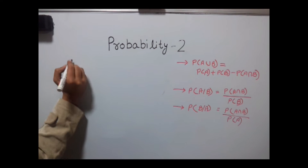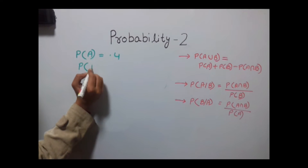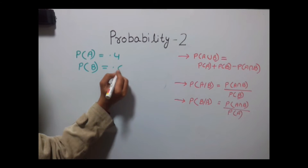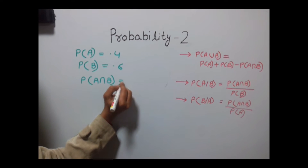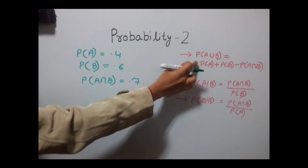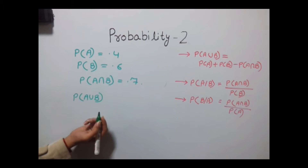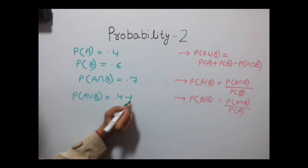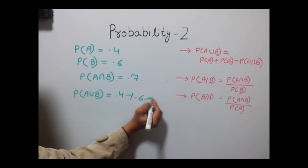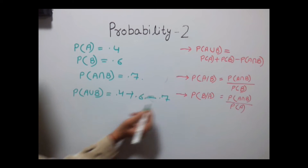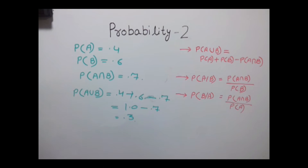Let's discuss this with an example. Suppose probability of A is 0.4, probability of event B is 0.6, and probability of A intersection B is 0.7. We need to calculate the probability of A union B. Putting the values in the formula: P(A∪B) = P(A) + P(B) − P(A∩B) = 0.4 + 0.6 − 0.7 = 1.0 − 0.7 = 0.3.